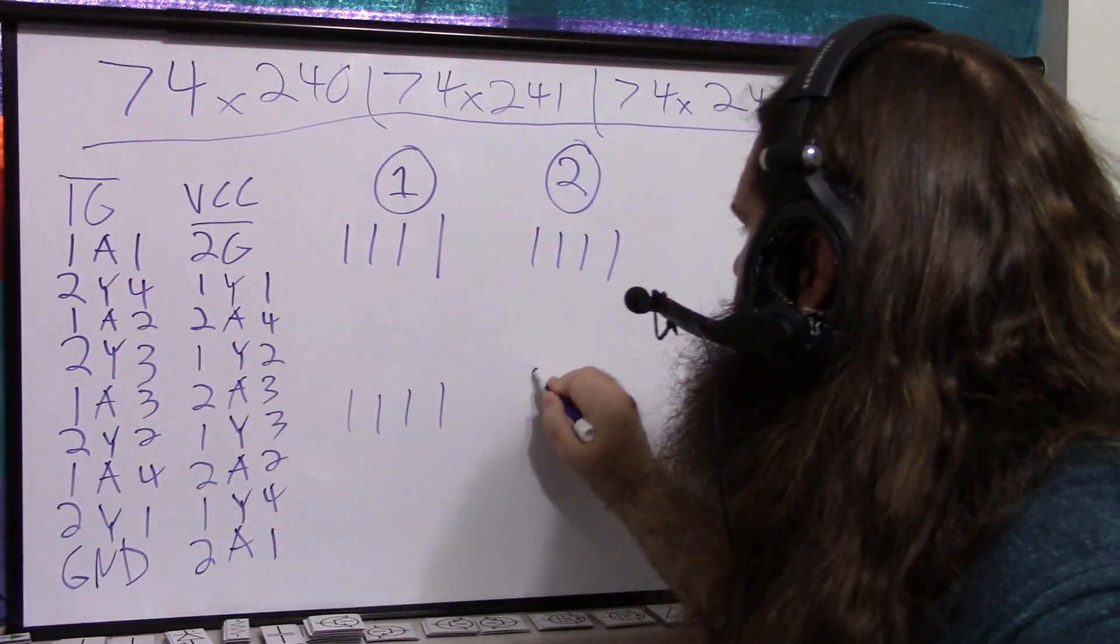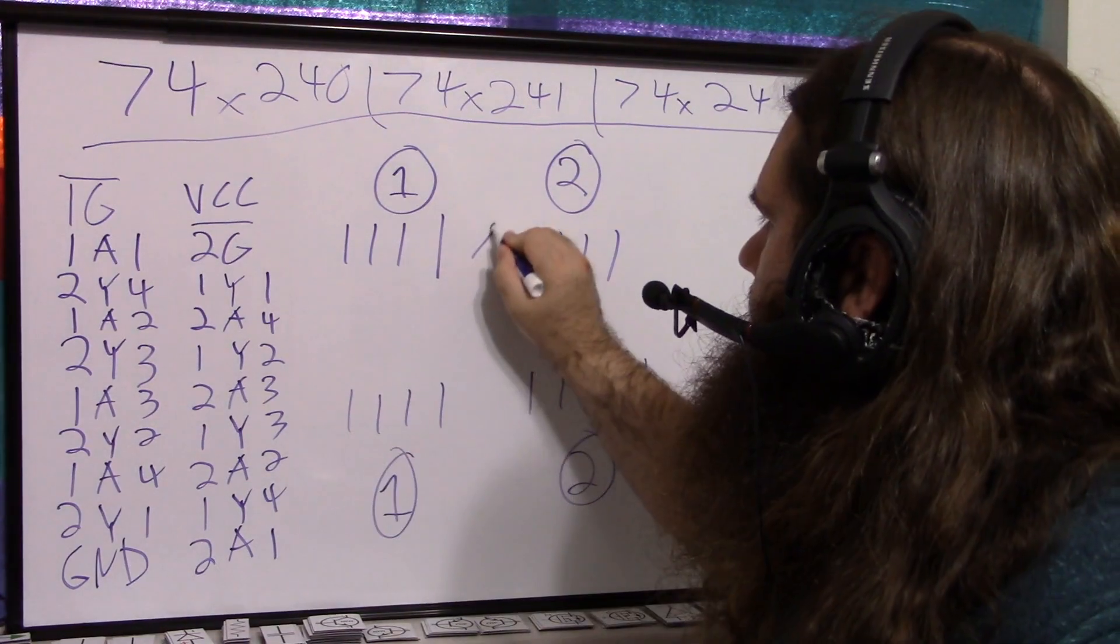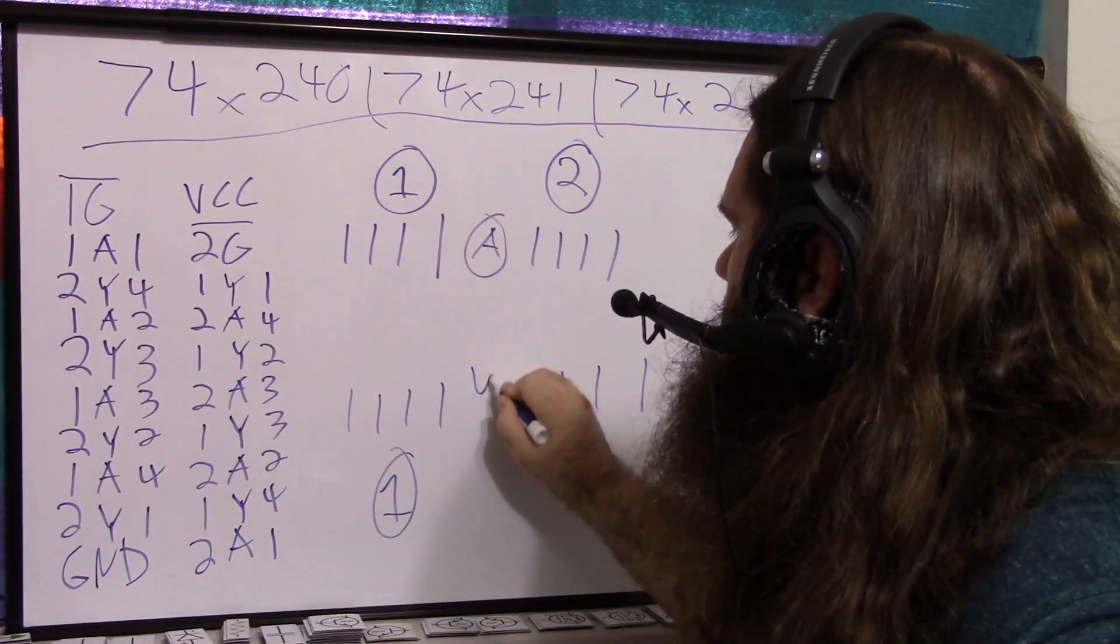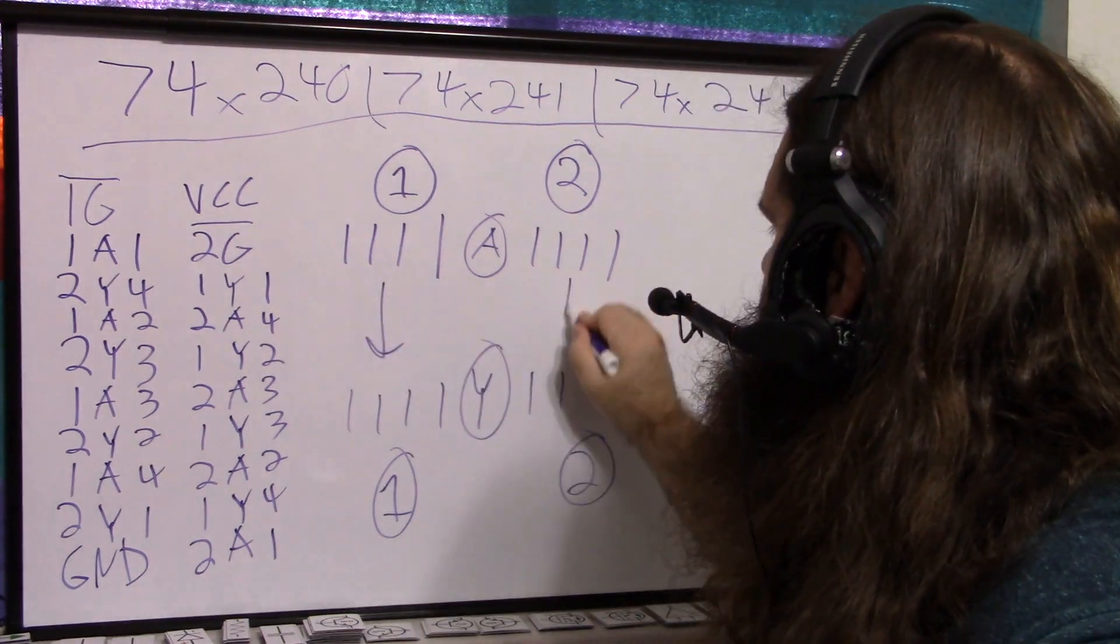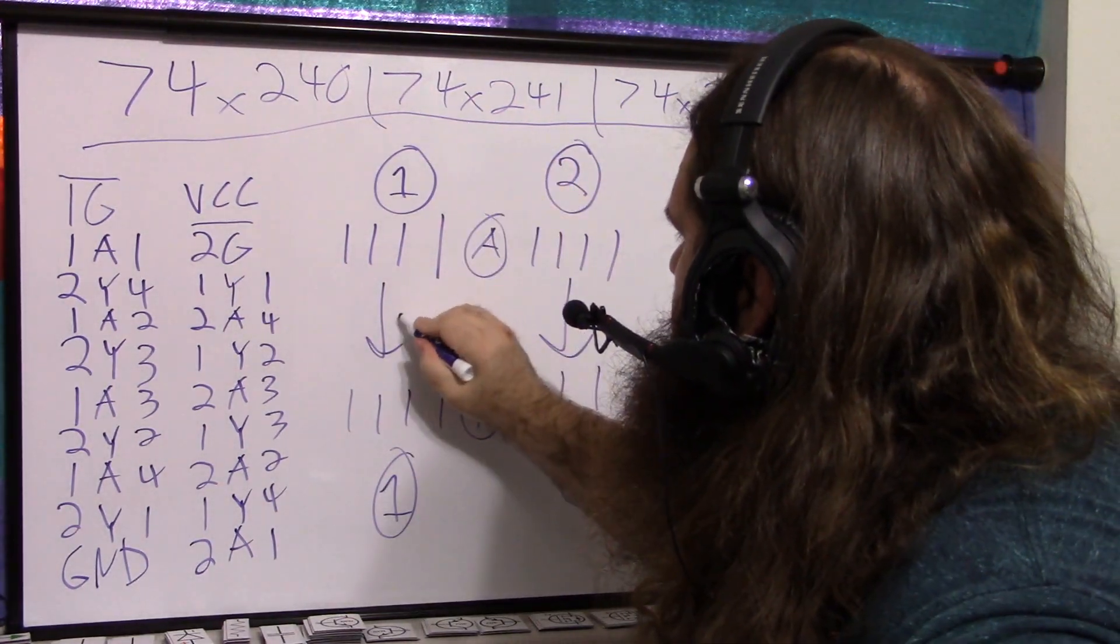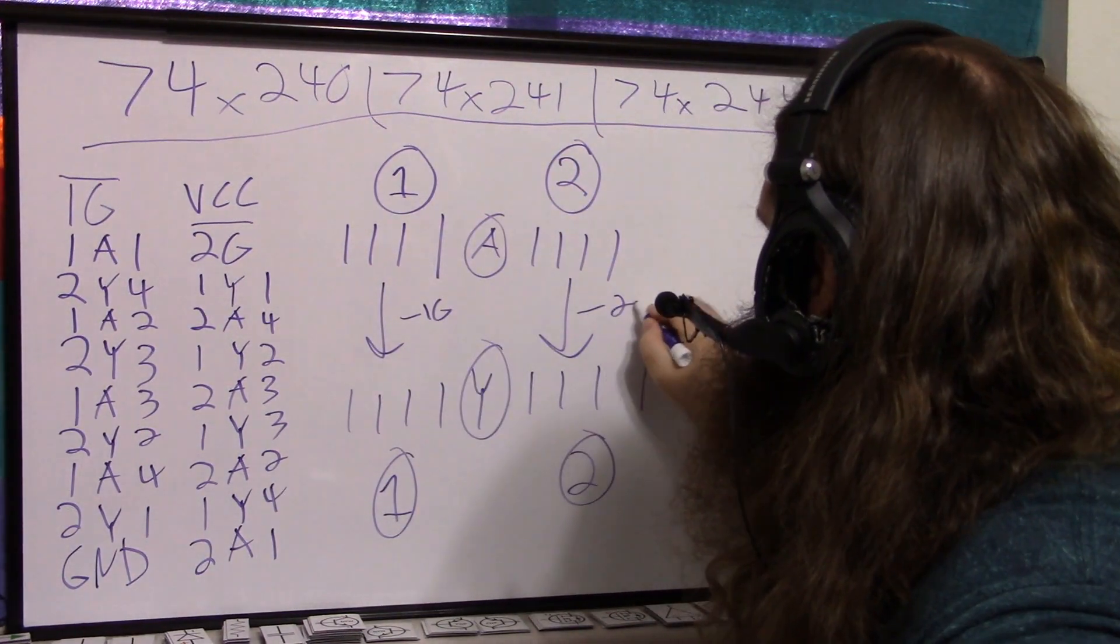Then you've got the outputs. Again, four wires for each. A is the input side, and Y is the output side. And it just goes like that. And then the control signal is 1G and 2G.